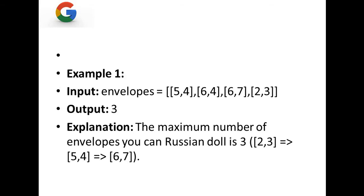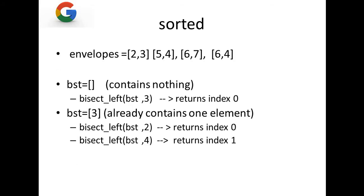For the first example with [5,4], [6,4], [6,7], [2,3], one approach is to sort the elements by width first and then by height. After sorting, the order becomes [2,3], [5,4], [6,7], [6,4]. Notice that [6,7] and [6,4] both have width six. Once you Russian doll the one with the bigger height, you cannot Russian doll the one with the lower height. So we sort by width ascending and descending height.